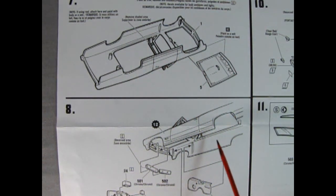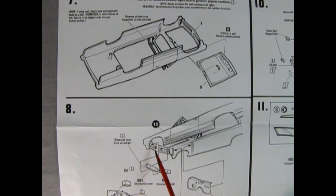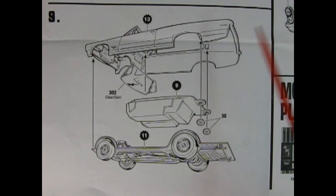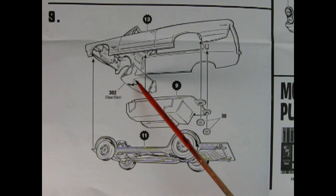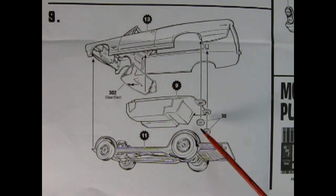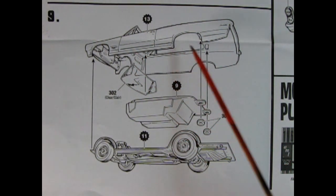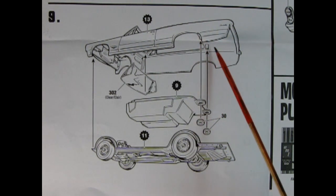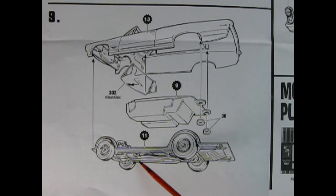In panel 8 we see the body getting completed. There are some chrome grills which pop into the openings here in the body. Then we've got our firewall with the battery and the washer bottle, and then our firewall going in place back here. Panel 9 shows our completed body getting the windshield put in place, and then the interior tub goes up in there. Here we have these nice little retainer circles which will pop up onto the pegs underneath. And then our entire chassis gets glued up underneath the body.